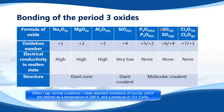SO₃ is sulfur trioxide. SO₂ is sulfur dioxide. Cl₂O₇ is dichlorine heptoxide. And Cl₂O is dichlorine monoxide.